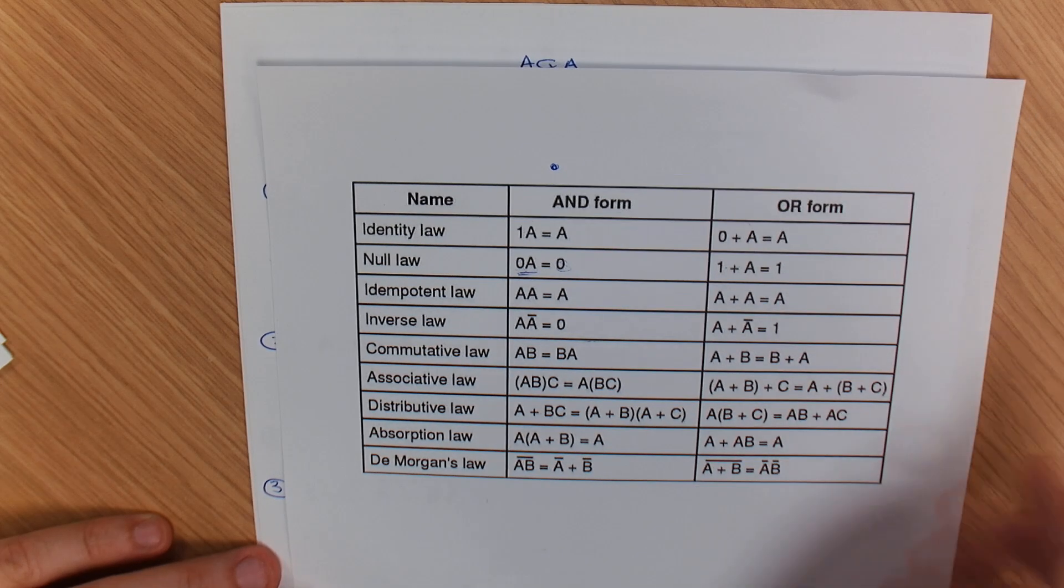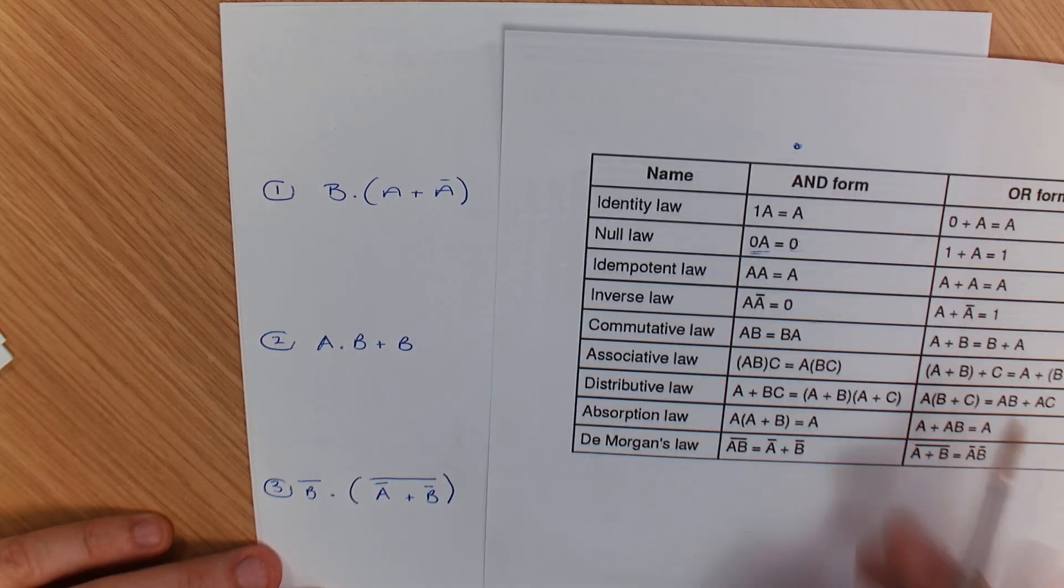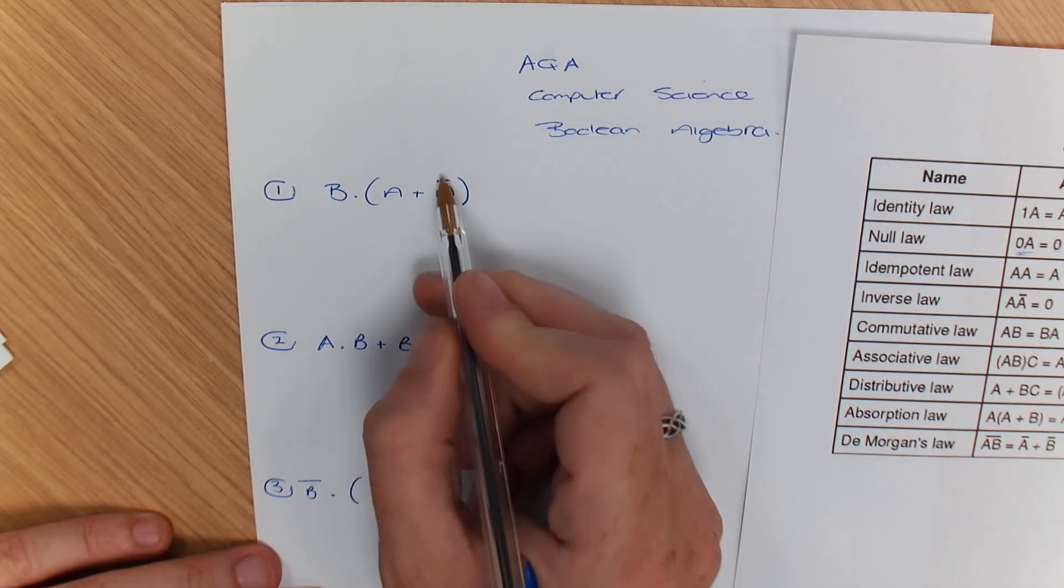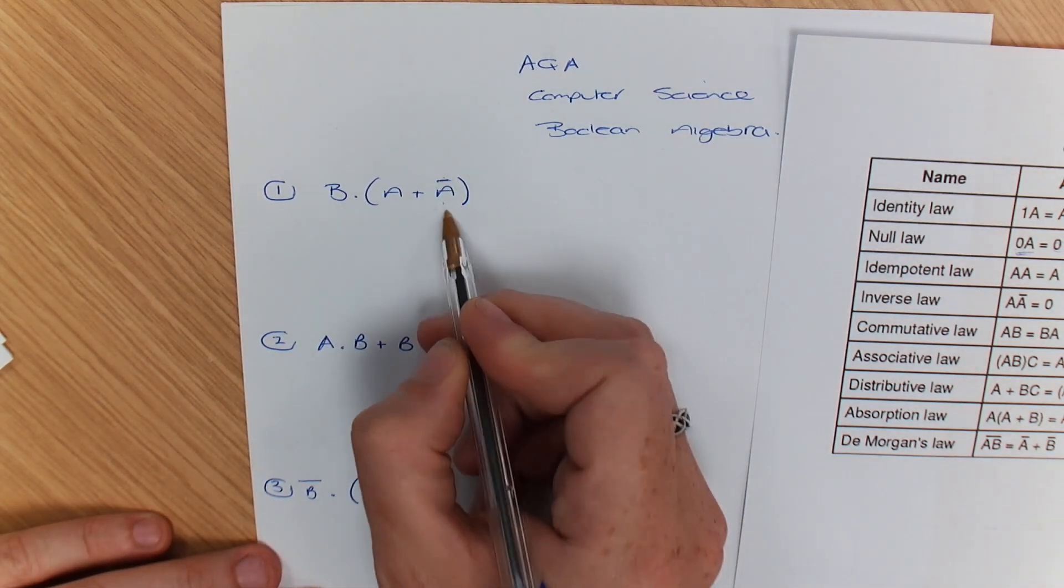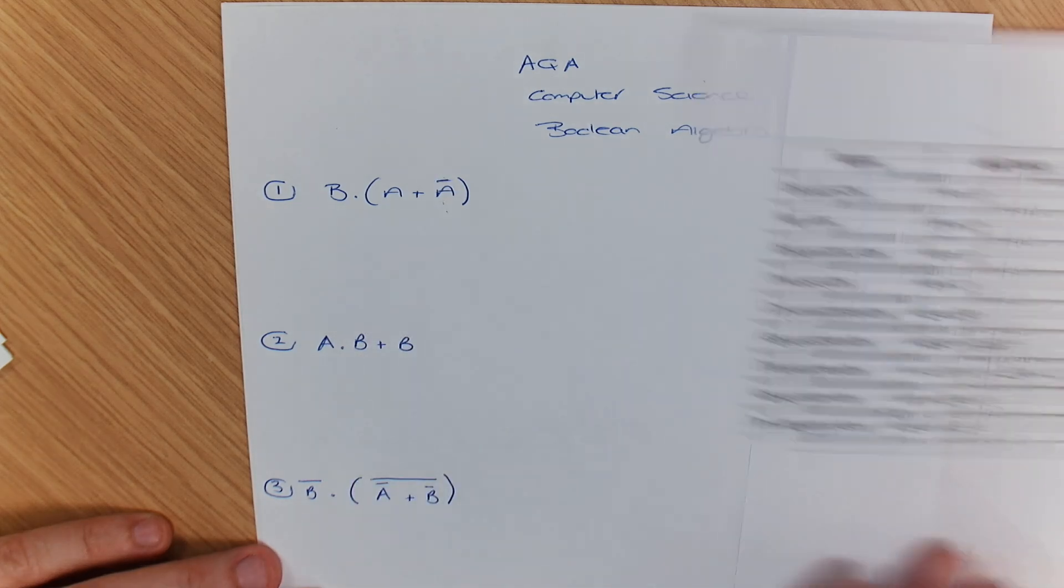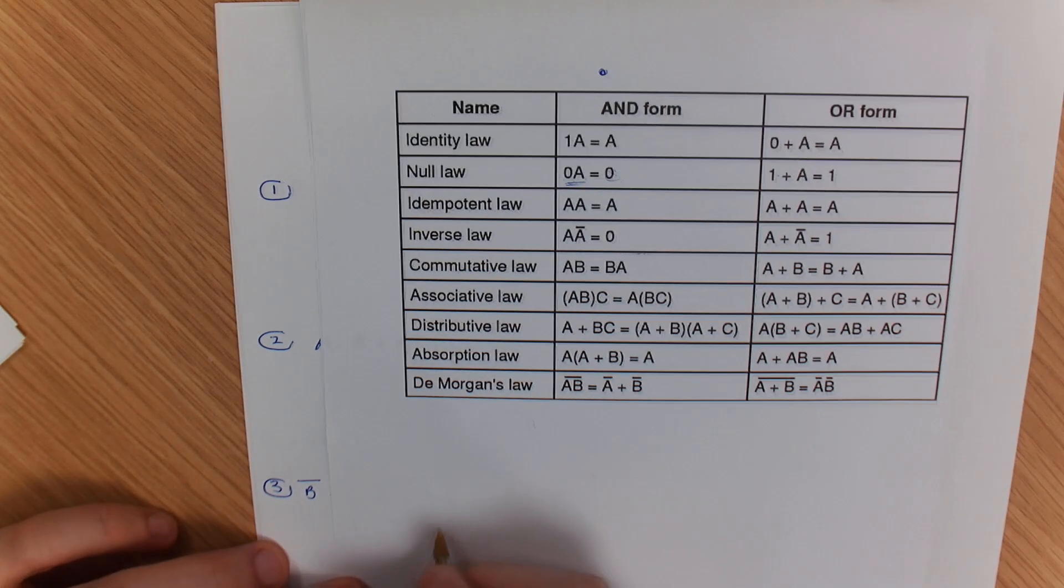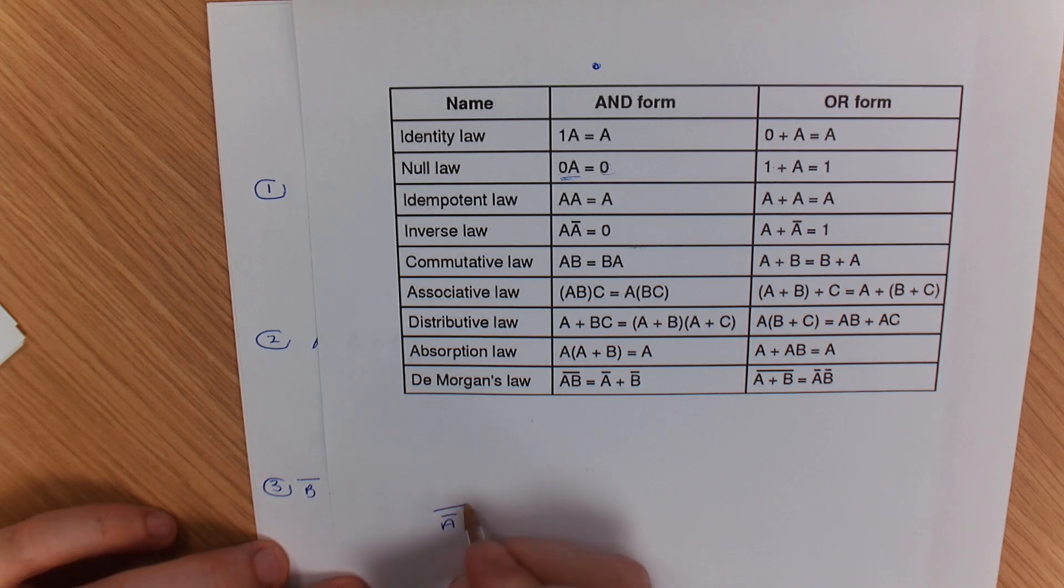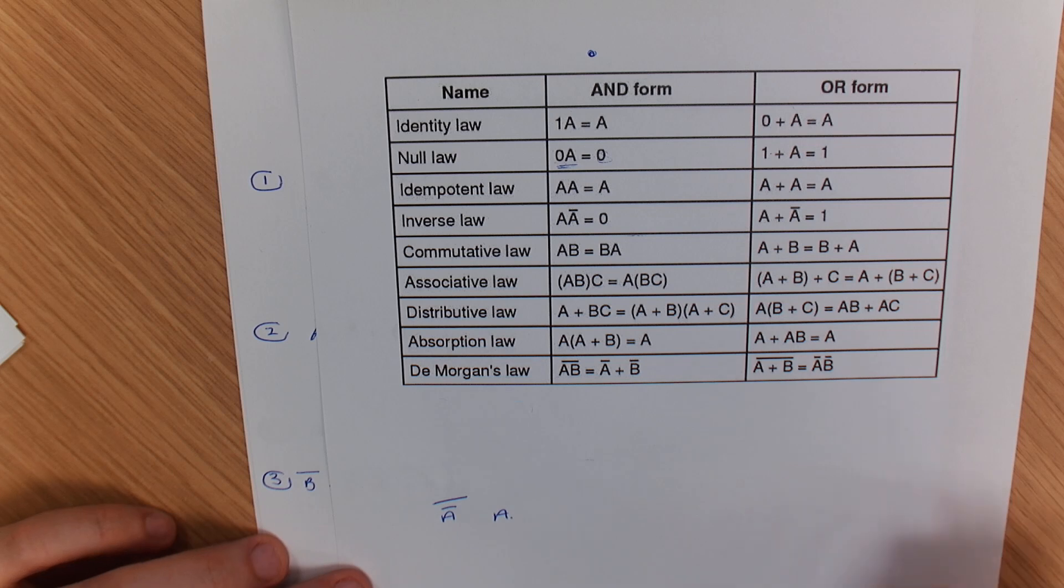I'm also going to walk you through the rules of if you see a line above the letter, that means not. But what you need to remember is if you have not A by putting another not over that, it then becomes A, and you'll see that as I work through some of these answers.